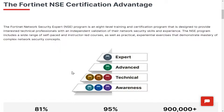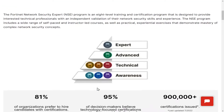It starts from the beginning with awareness levels one, two, and three. Then you get more technical with four, five, and six. You become an advanced person on Fortinet with NSC7, and then you're an expert once you reach level eight.